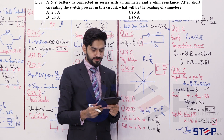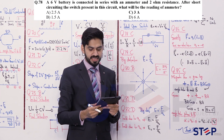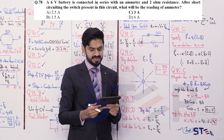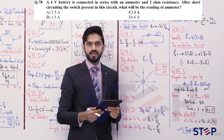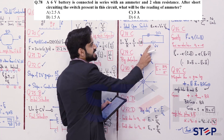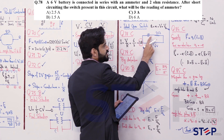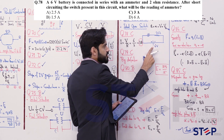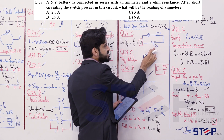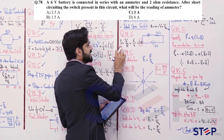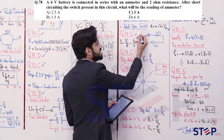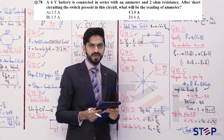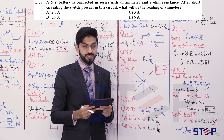Question 78: A 6 volt battery is connected in series with an ammeter and a 2 ohm resistance. After short-circuiting the switch, what is the ammeter reading? Using Ohm's law: I = V/R = 6/2 = 3 amperes. Answer is option C.